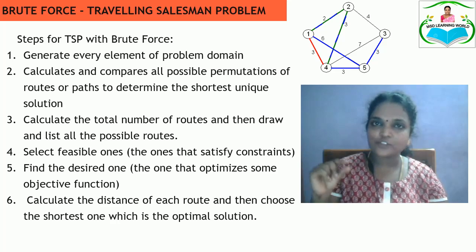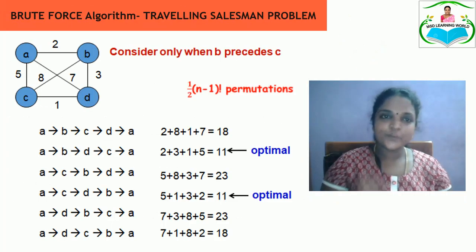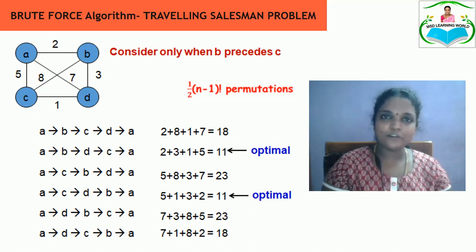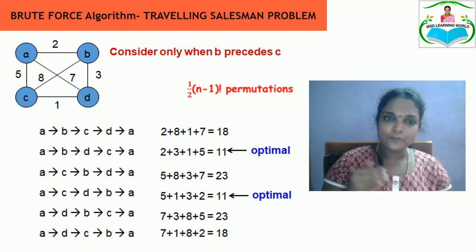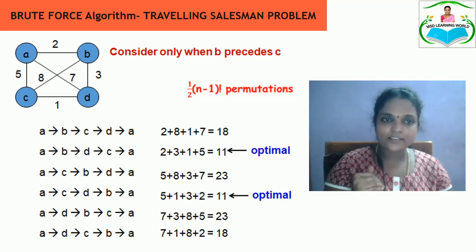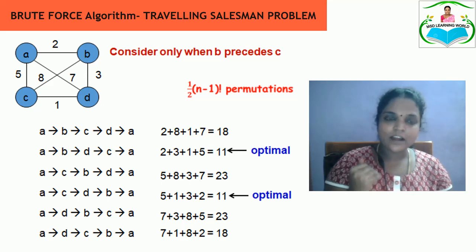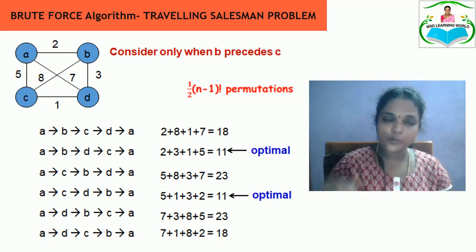Let us see an example for the Travelling Salesman Problem. There are four vertices and the edges are connected between them. From A to B the distance is 2, from B to D the distance is 3, from C to D the distance is 1, from A to C the distance is 5, from C to B the distance is 8, and from A to D the distance is 7.